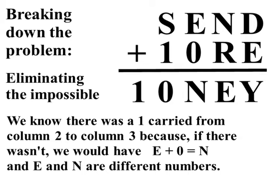I mean, if nothing was carried over to it and you add 0 you'll come up with the same number. Since E and N are different numbers we know something was carried. We know 1 was carried.